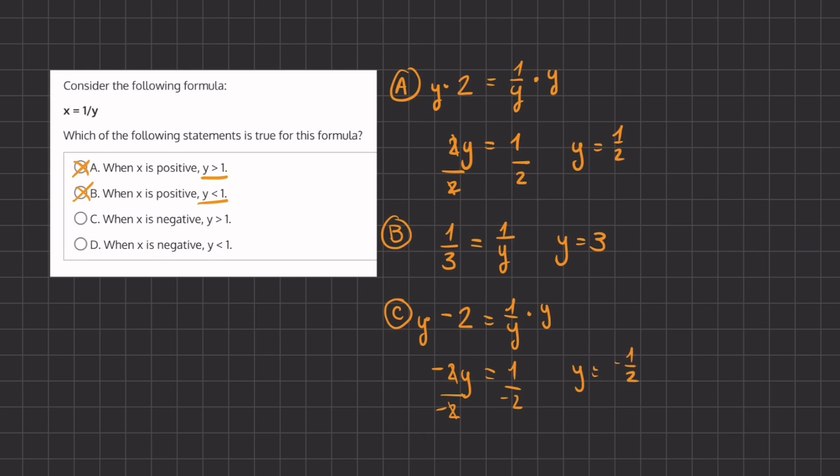And therefore, if x is a negative number, y will have to be also a negative number. And that's why C is also eliminated. And let's check why D is correct.